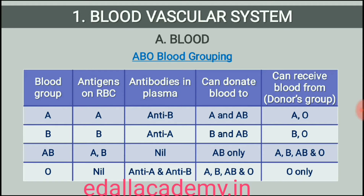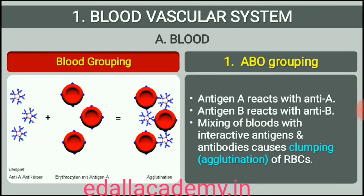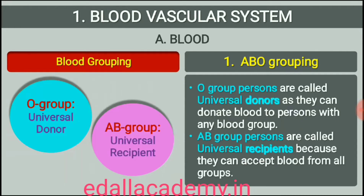You probably know that during blood transfusion, any blood cannot be used. The blood of a donor has to be carefully matched with the blood of a recipient before any blood transfusion to avoid severe problems of clumping, destruction of RBC. Group O blood can be donated to persons with any other blood group and hence O group individuals are called universal donors. Persons with AB group can accept blood from persons with AB as well as the other groups of blood. Therefore, such persons are called universal recipients.